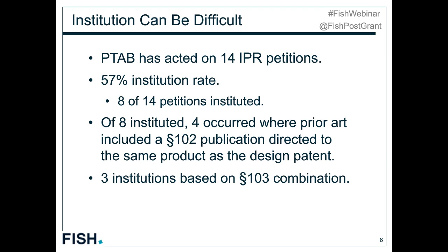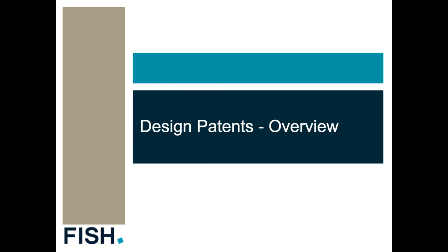With that background on statistics, we'll turn to the two substantive topics to consider in IPRs of design patents, whether as a petitioner or patent owner: claim construction and obviousness. We'll walk through the rules and then a few examples of how the PTAB has applied those rules. First, we'll take a look at design patents generally and see how that plays into claim construction.